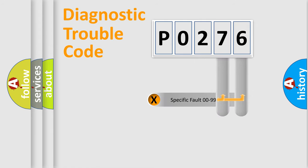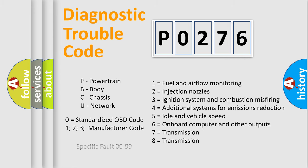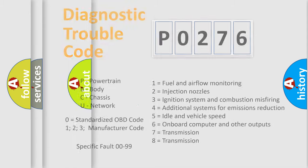Only the last two characters define the specific fault of the group. Let's not forget that such a division is valid only if the second character code is expressed by the number zero.